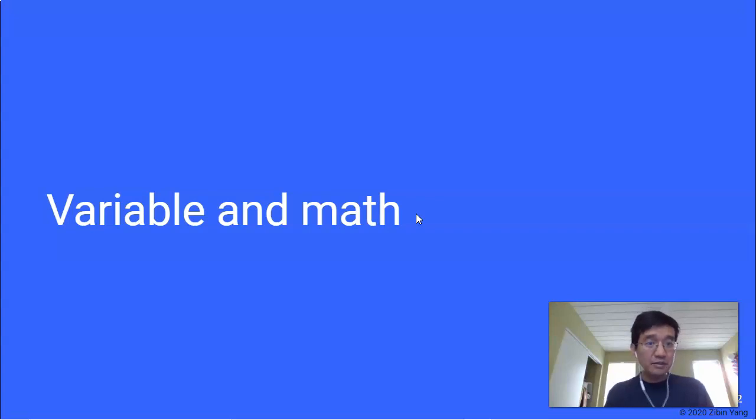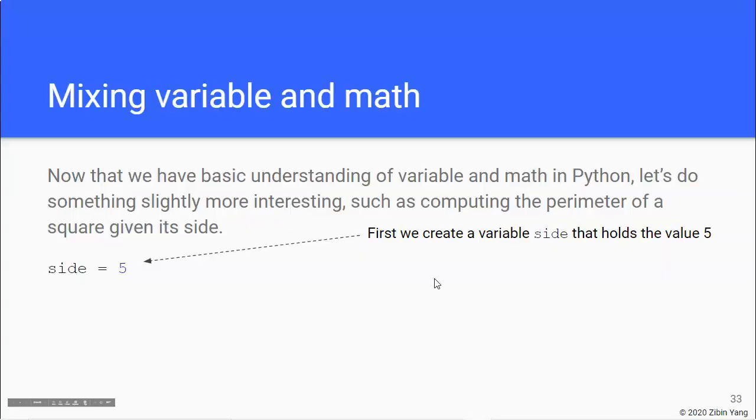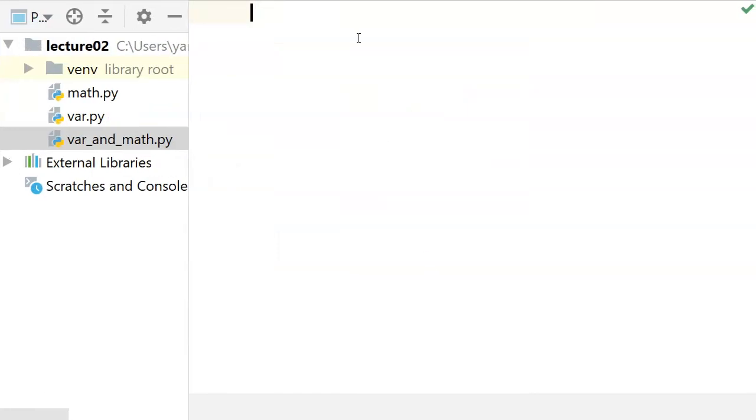Hi, in this video we're going to talk about putting variable and math together and doing something more useful. The first example I'm going to show is how to compute the perimeter of a square given its side.